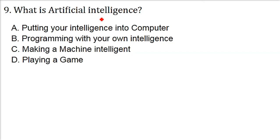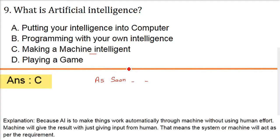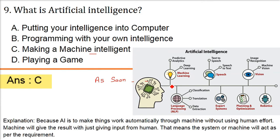What is artificial intelligence? So artificial intelligence is all about making machine intelligent like human. Human brain can think, machine should also think like humans. If you go to Gmail, now you type as soon, it will by itself give as soon as possible. So this is coming from NLP. That is, you have made the machine so intelligent, software so intelligent. It is giving you the purpose. Because AI is to make things work automatically through a machine without using human effort. Machine will give the result with just giving input from human. The system or machine will act as per the requirement because humans have emotions, they have feelings. Artificial intelligence is a big subject consisting of machine learning, speech, vision, NLP, expert system, planning optimization, and robotics.